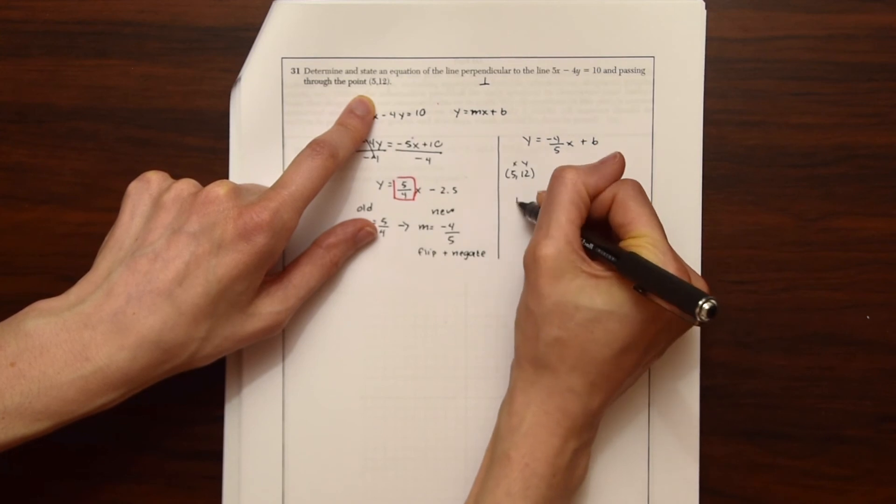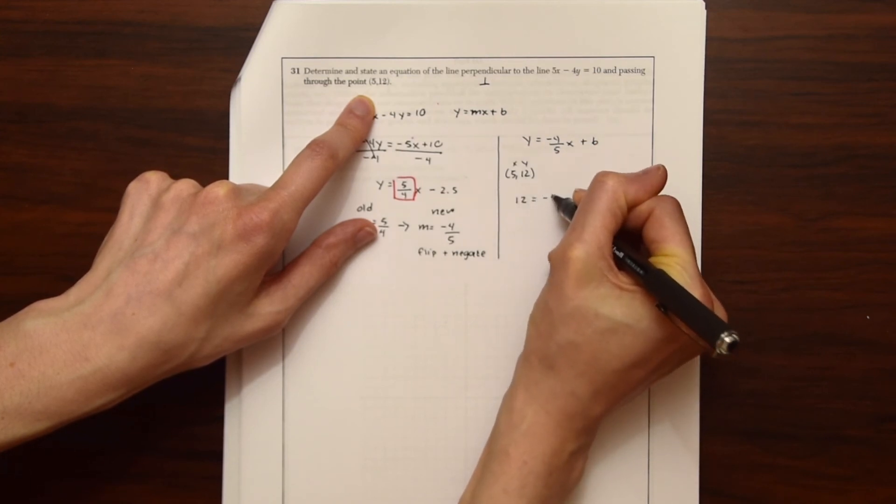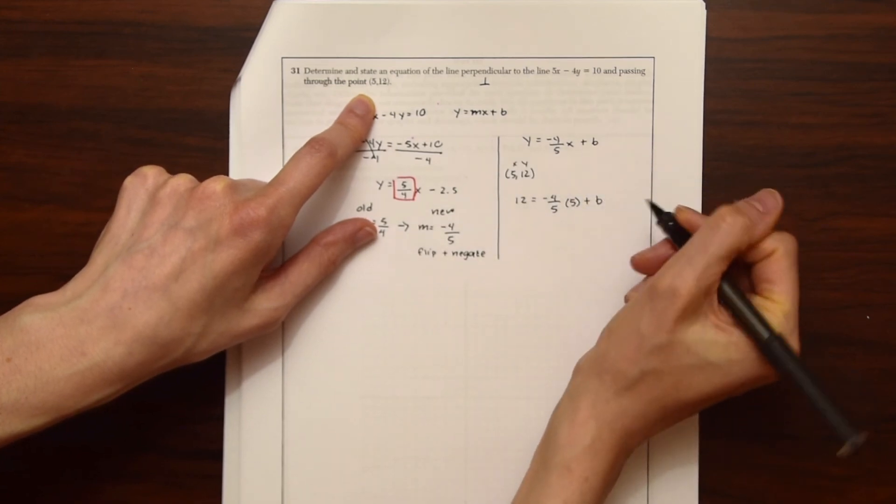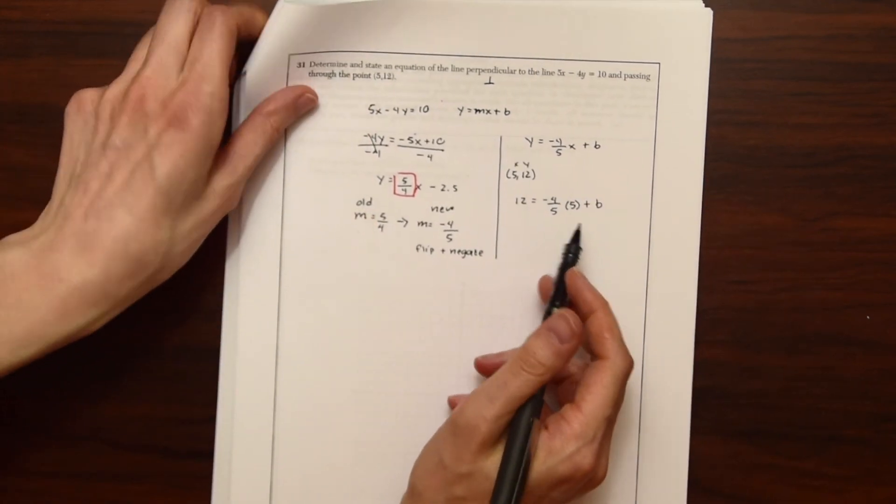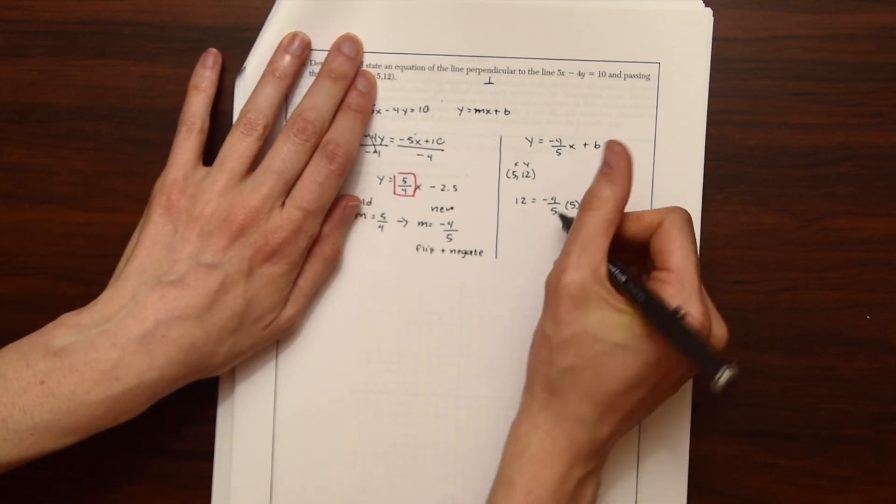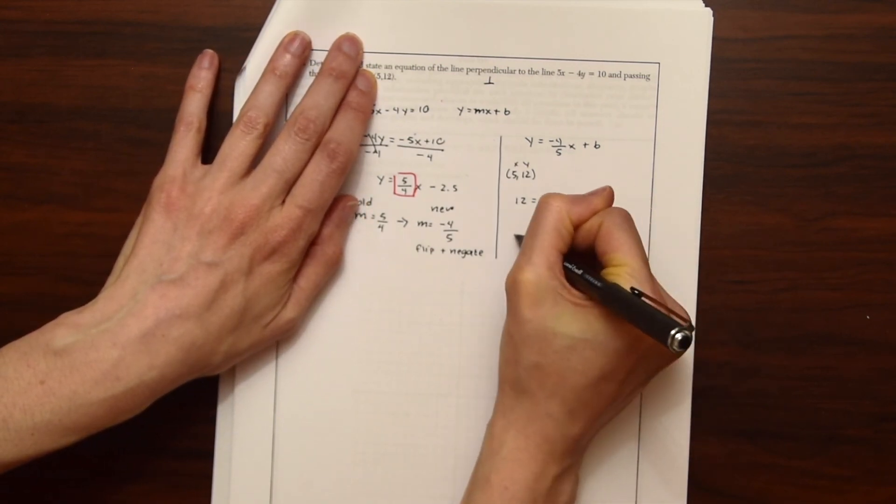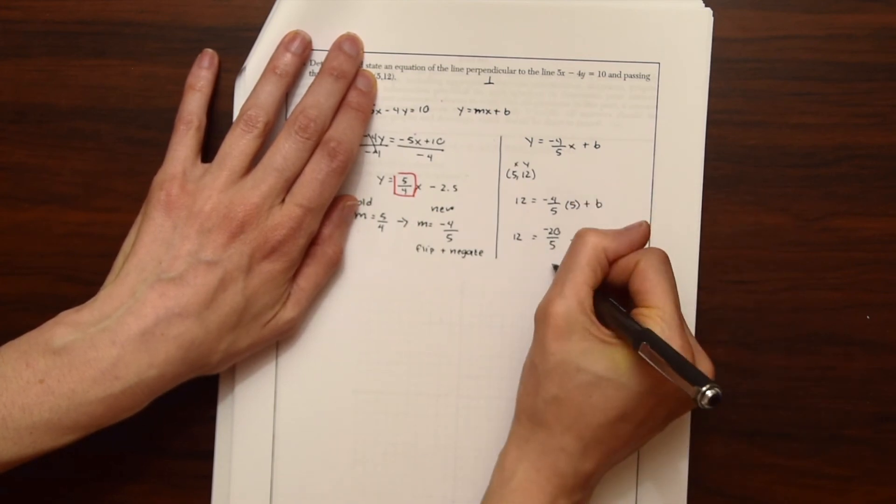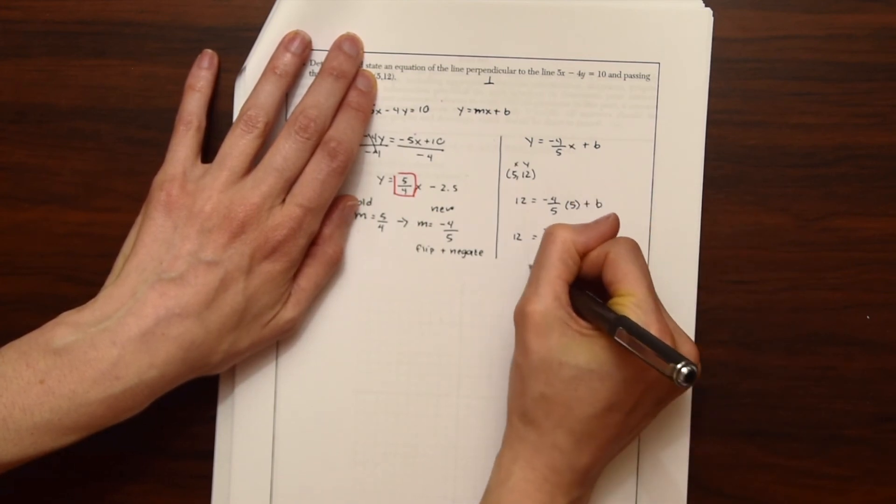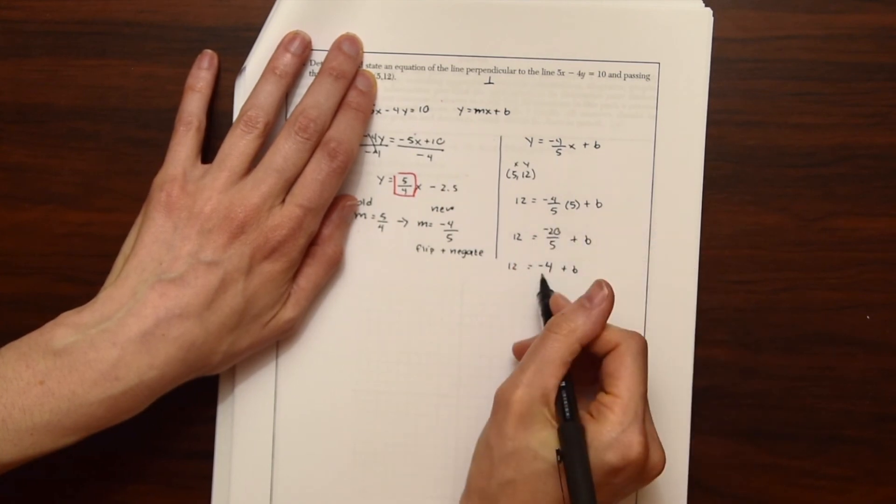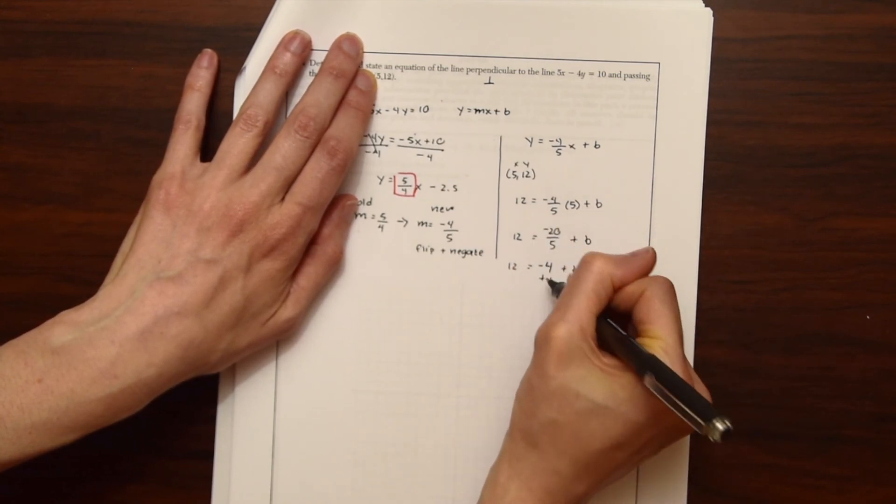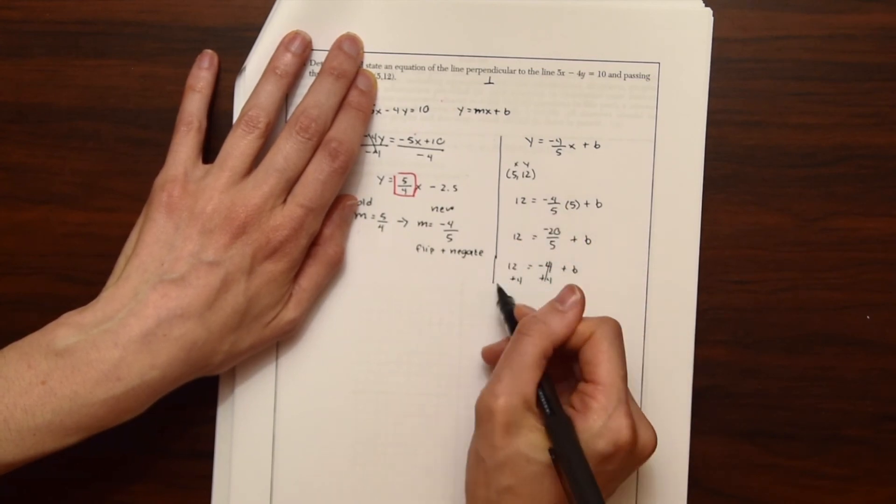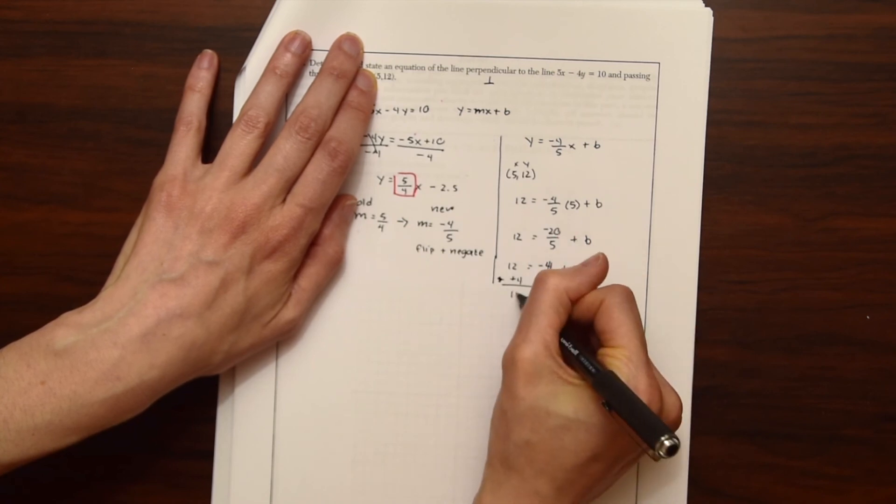And we're just going to plug those into our equation using that slope we just found. So 12 is equal to negative 4 fifths times five plus B. So five times negative four is negative 20 over five. This is equal to 12 plus B. Negative 20 divided by five is minus four. And now we just want to move that four to the other side to get B alone. So 12 plus four is equal to 16.